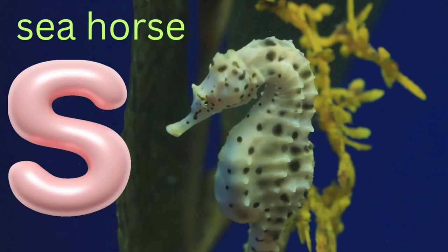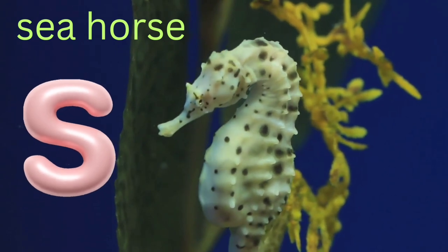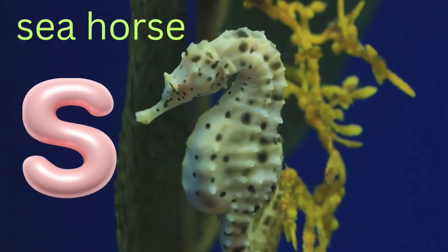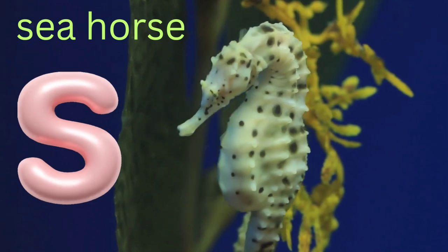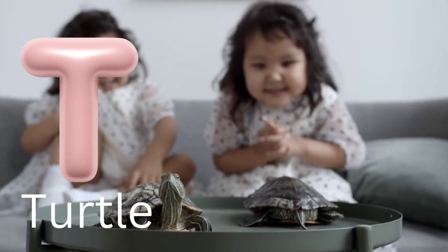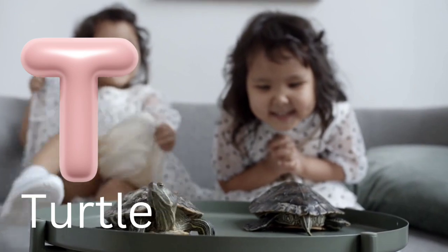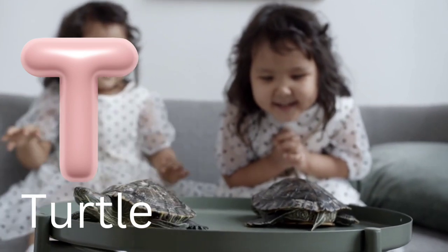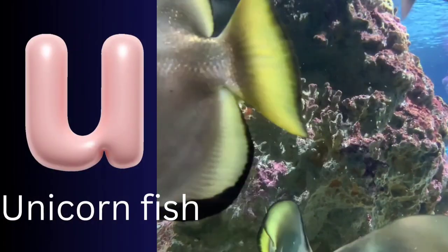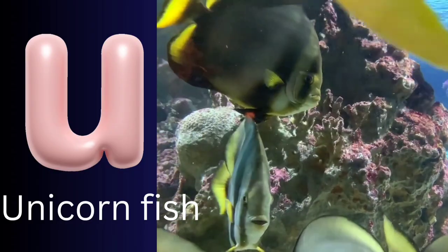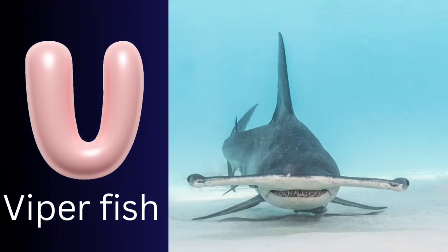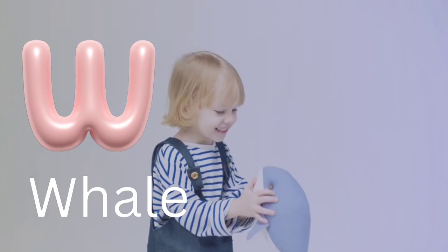S is for seahorse. T is for turtle, turtle. U is for unicorn fish. V is for viper fish.